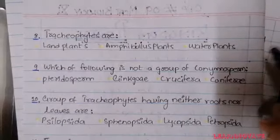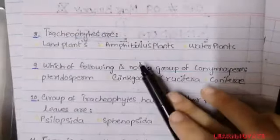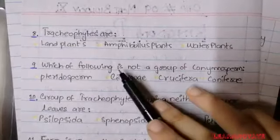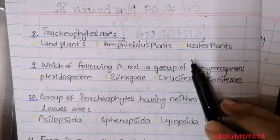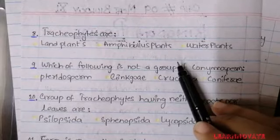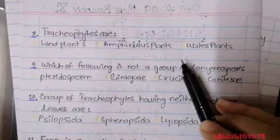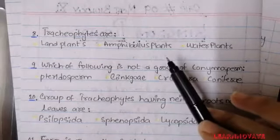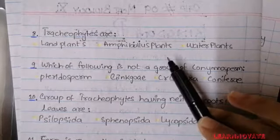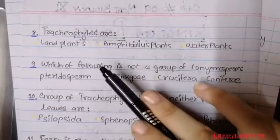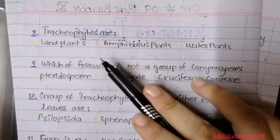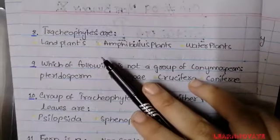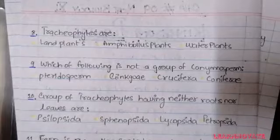Question 8: Tracheophytes are — A. Land plants, B. Amphibious plants, C. Water plants. We discussed previously that water plants are mostly bryophytes. If you have learned the chapter, you know that tracheophytes are land plants and exhibit all the characteristics of land plants discussed in the previous MCQ. So option A for question number 8 is correct.